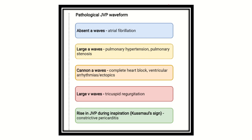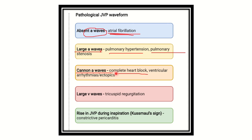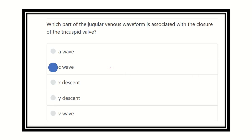Regarding pathological JVP waveforms: absent 'a' wave occurs in atrial fibrillation — this is very important. A large 'a' wave occurs in pulmonary hypertension or pulmonary stenosis. A cannon 'a' wave occurs in complete heart block. Among these pathological conditions, the 'a' wave abnormalities are the most important to remember.